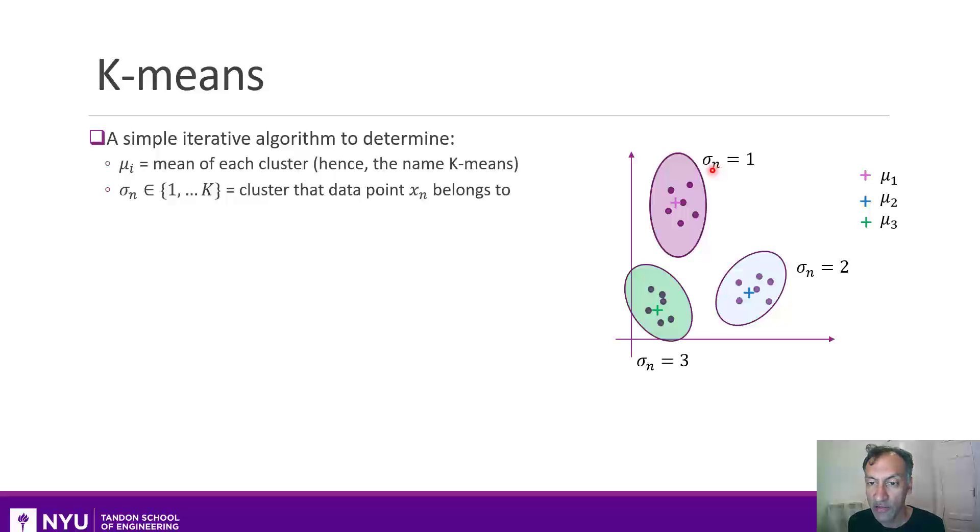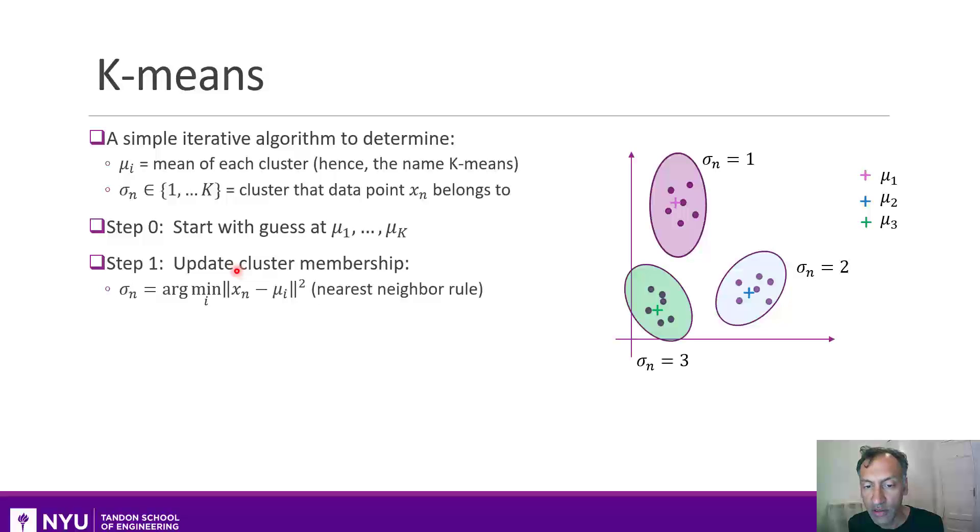K-Means is a very easy algorithm for solving these mu's and these sigmas. Basically, what you do is you start off with some guess of the cluster centers, mu1 to muK. Turns out the algorithm is a little sensitive to that, so I'm going to show you some of the techniques for picking good cluster centers to begin with. After you do this, the first step you do is you update the cluster membership. And that's very easy. All you do is for each of your data points, you assign it to the cluster where it's closest to the center.